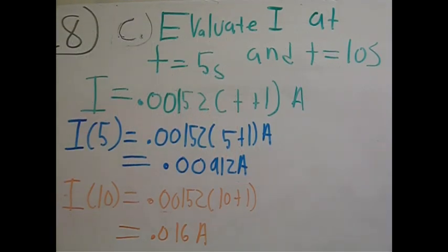Part C of problem 28 asks the reader to evaluate i at t equals 5 seconds and t equals 10 seconds. We know i to be 0.00152(t+1) amps from Part B, so all we have to do is plug in 5 and 10 for t. For the current at t equals 5, it's 0.00152 times (5 plus 1), which simplifies to 0.00912 amps.